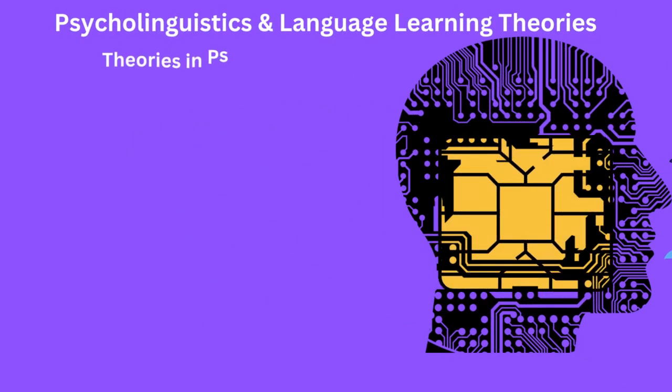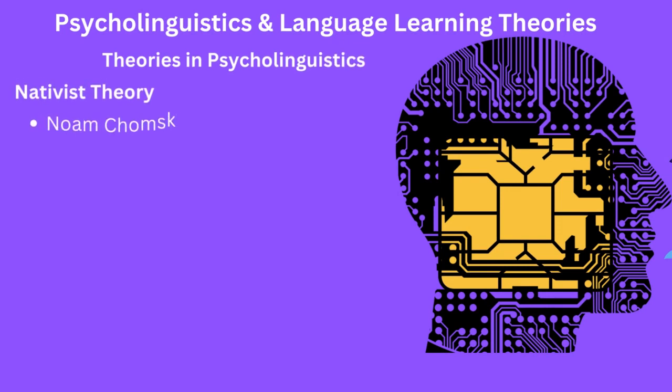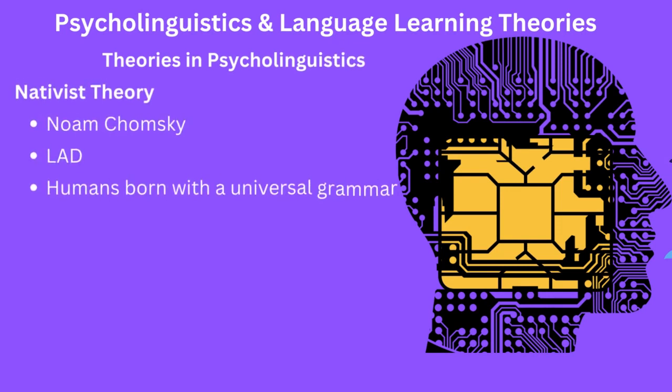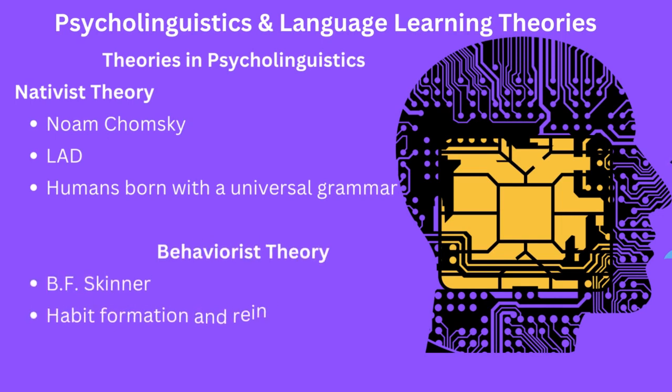Two important theories of language learning and acquisition in psycholinguistics are the nativist and the behaviorist approaches. The nativist theory, also known as the innateness hypothesis, states that the ability to learn language is innate, or hardwired, in the human brain. Children are born with an innate capacity for language that allows them to acquire it without direct instruction. This theory was first proposed by Noam Chomsky, who argued that children are born with an innate grammar, or universal grammar, that guides them in acquiring their first language.